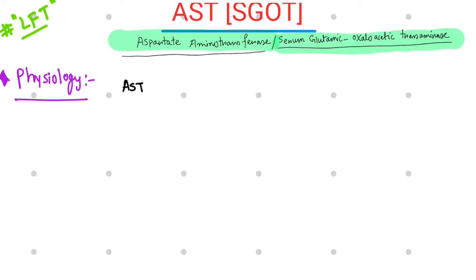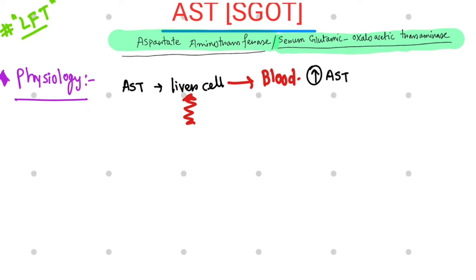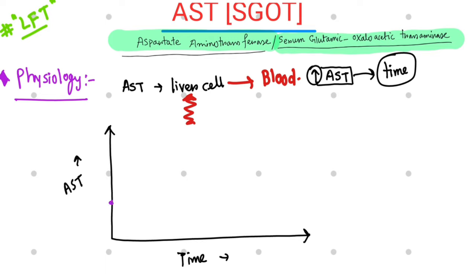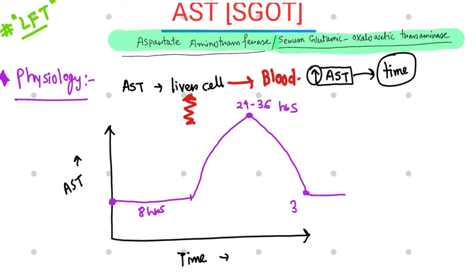AST stays inside the liver cell, so when there is any damage to the liver cell, this enzyme gets released into the blood. Elevated levels of AST suggest hepatocellular damage. The level of AST depends upon the time at which the blood was collected after the injury. In acute liver injury, AST elevates after 8 hours, reaches its peak at 24 to 36 hours, and then returns to normal within 3 to 7 days.